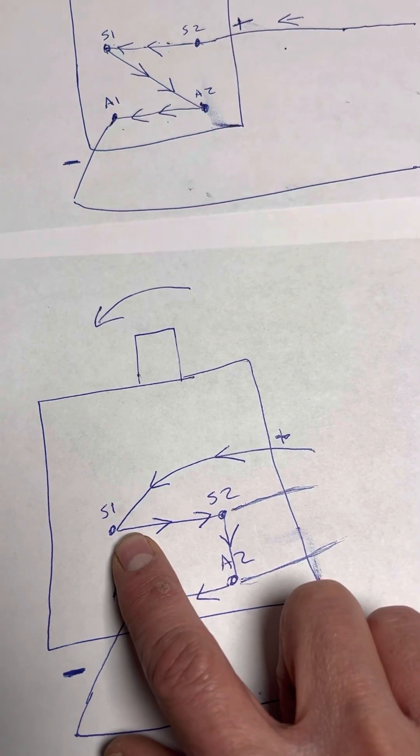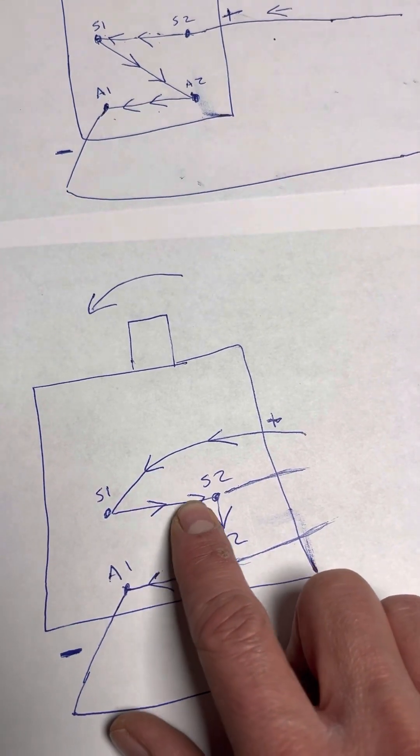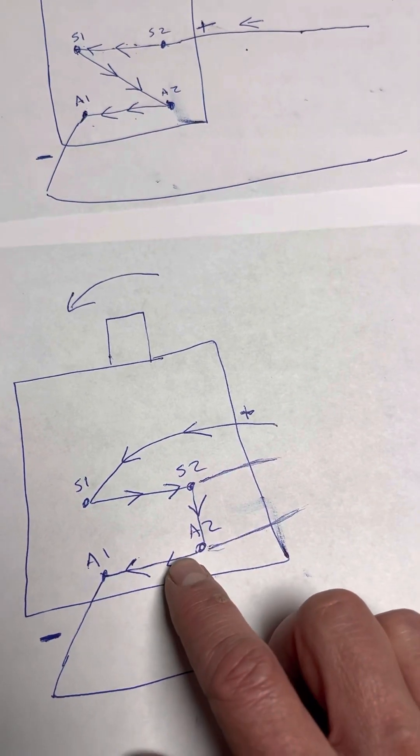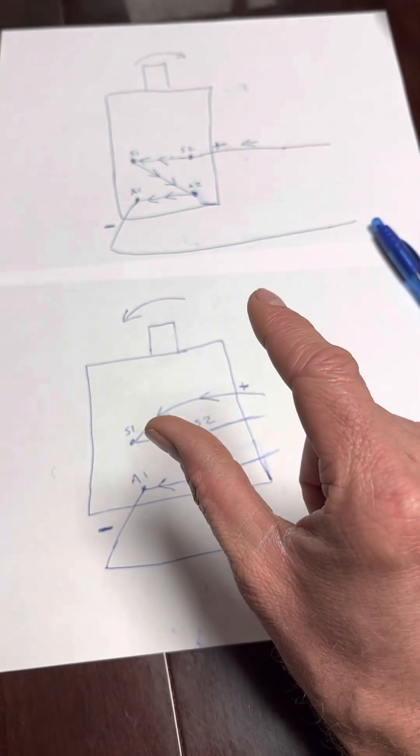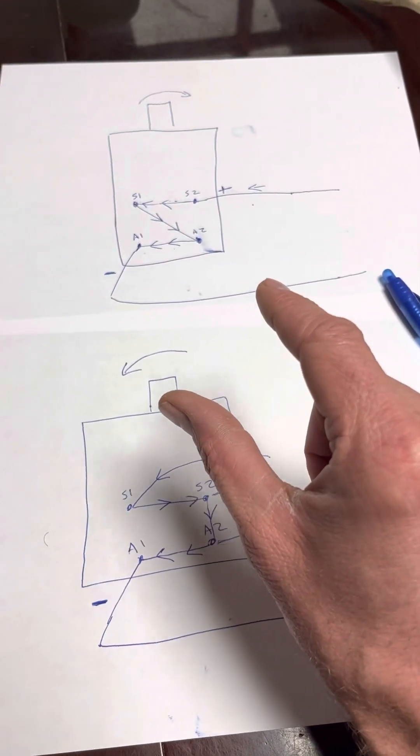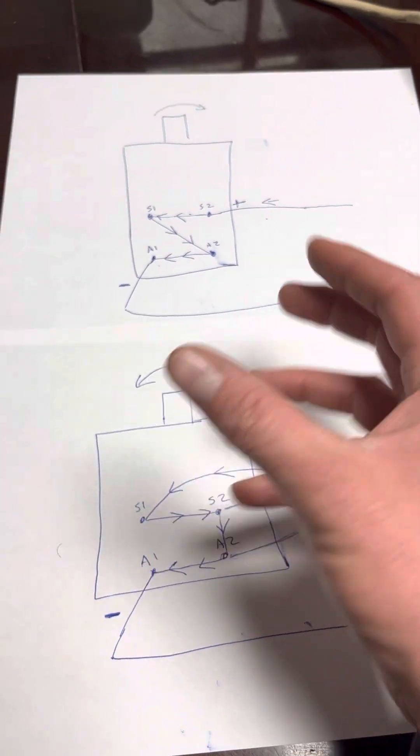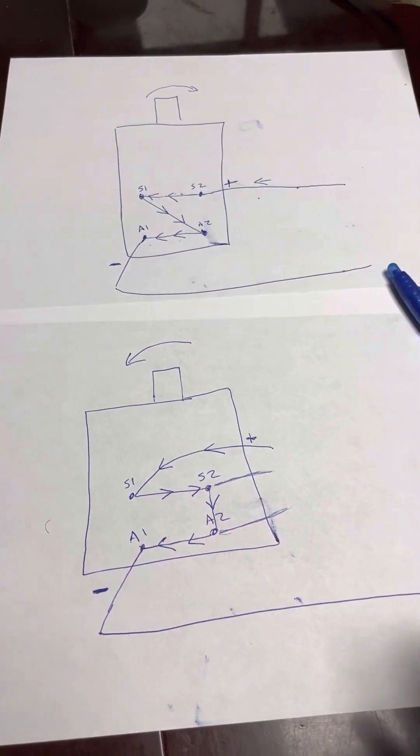What you have is the current flowing through the stator this way, and then the current flowing through the armature that way. So you have to switch the polarity of the fields to get these motors to spin the other way.